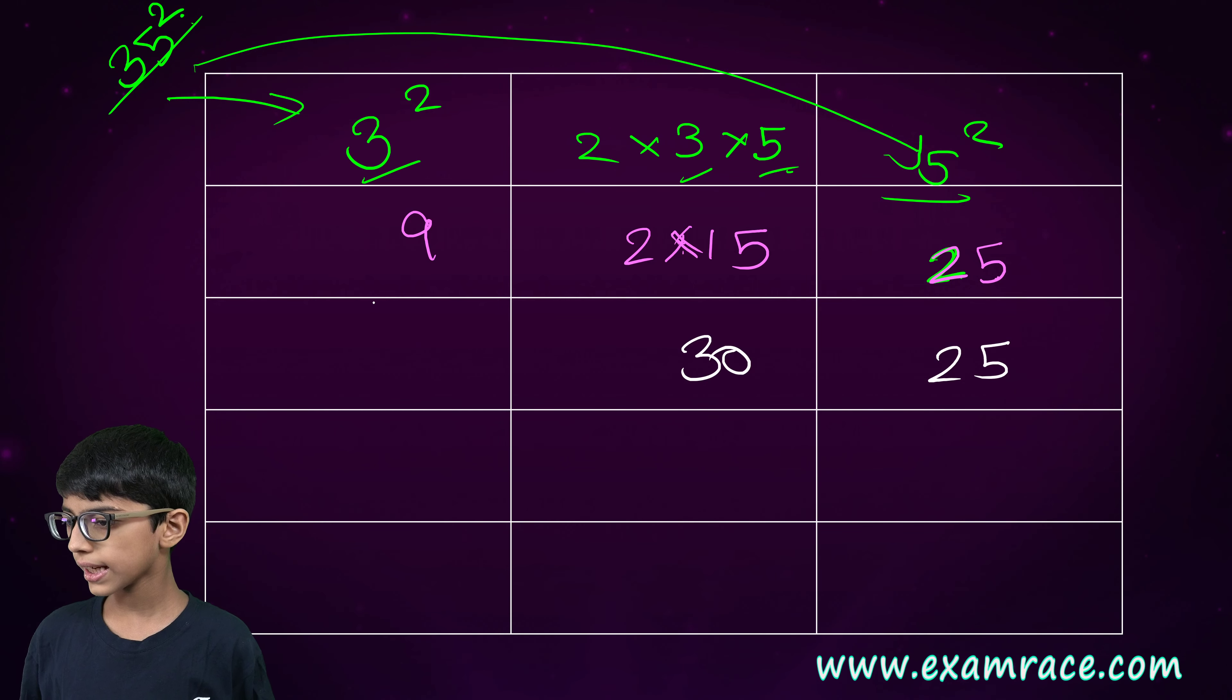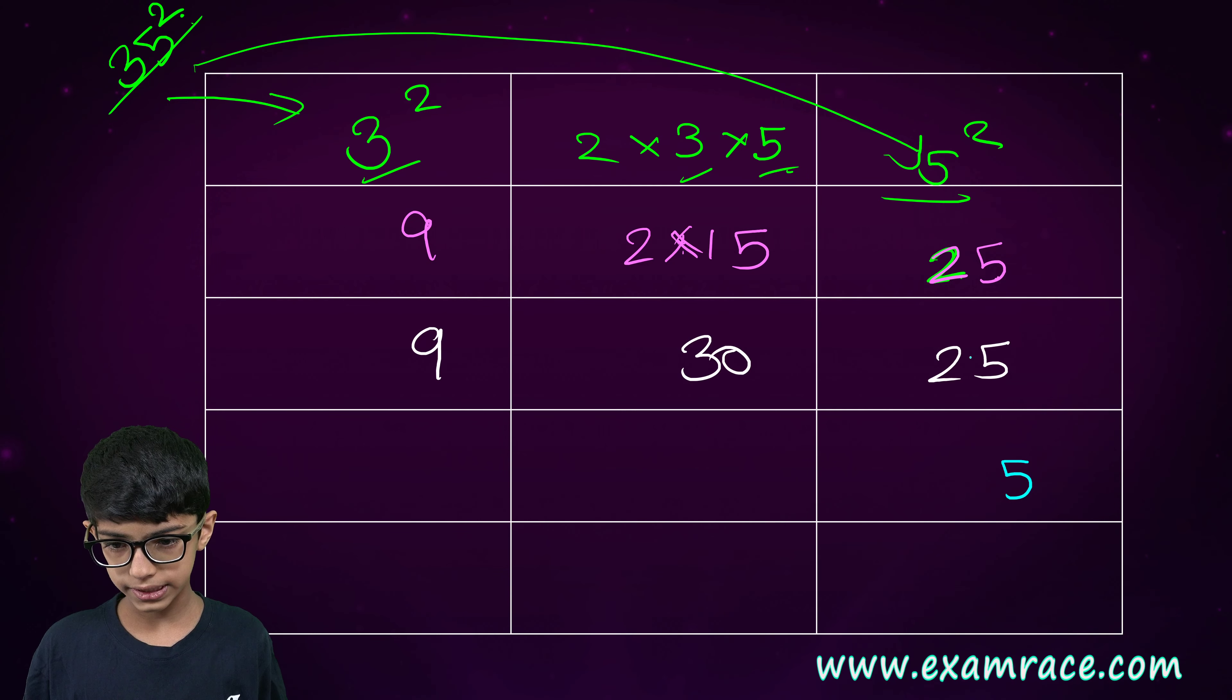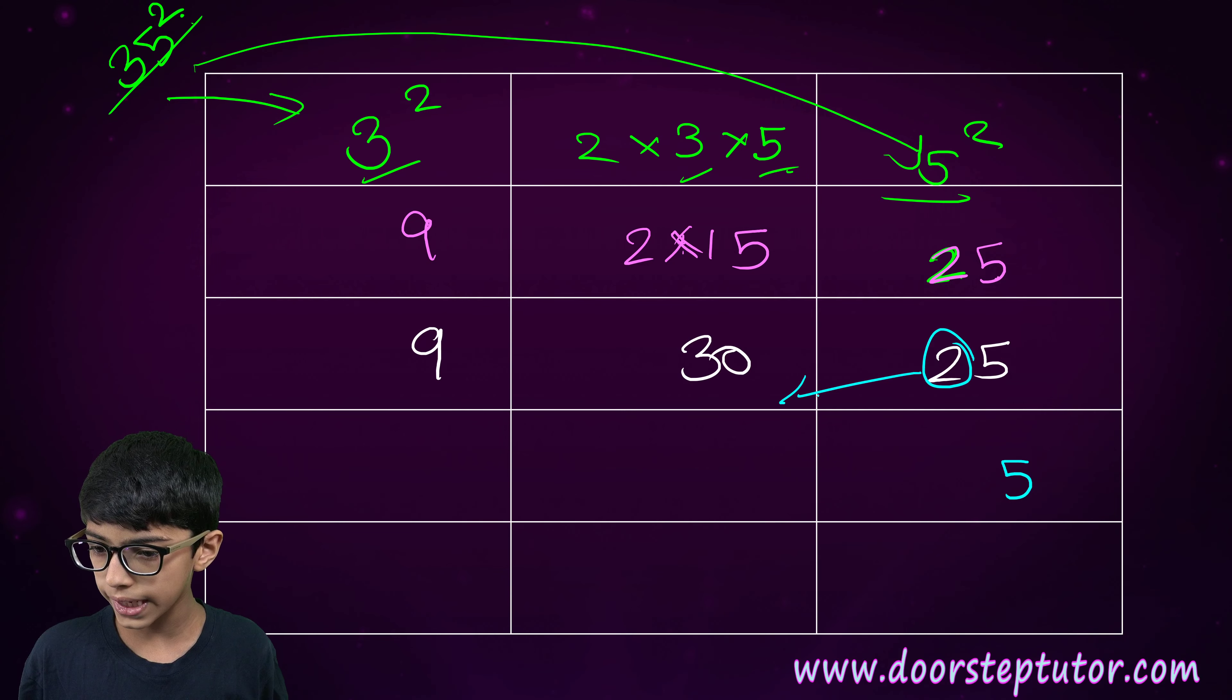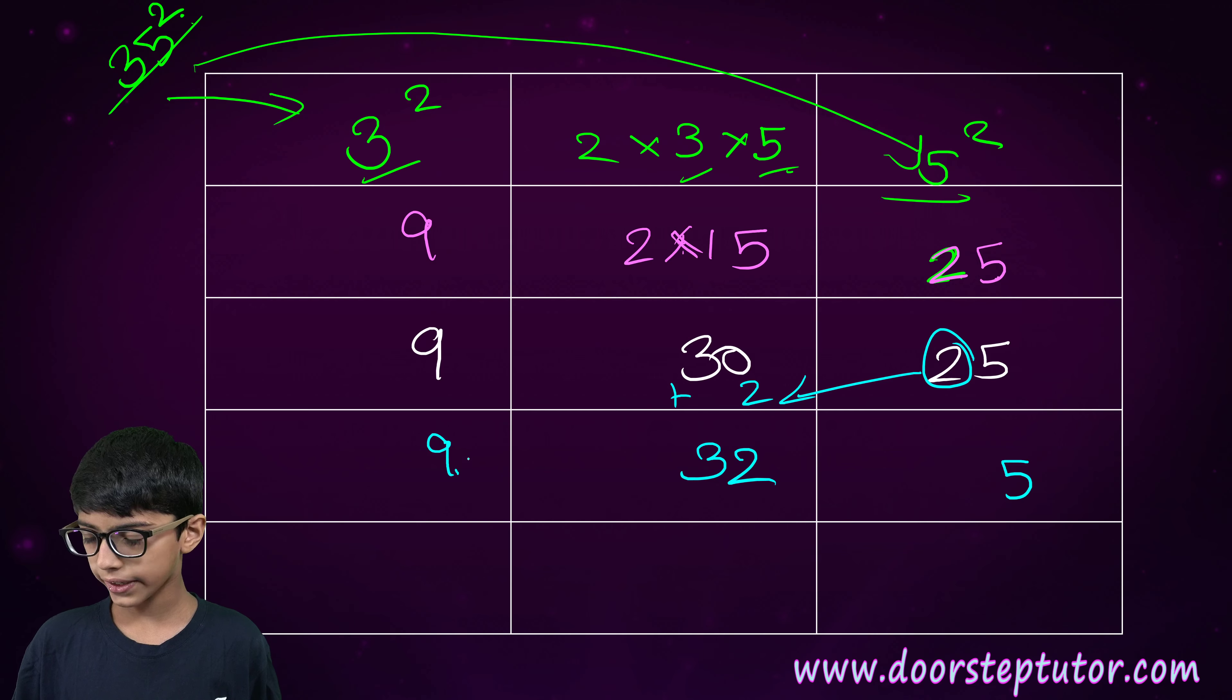Then, twenty-five will come as it is. Here, thirty. And here, nine. Now, only five will come as it is. Two will be added here. Thirty-two. And nine will come as it is.